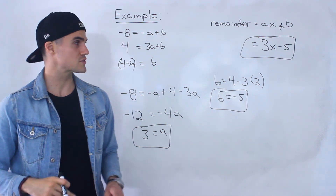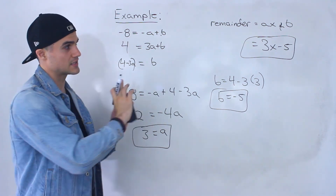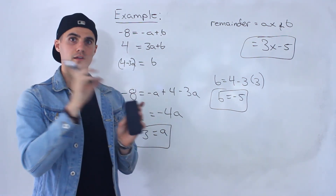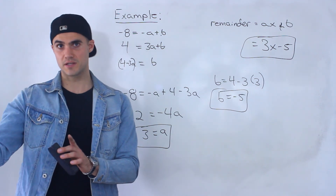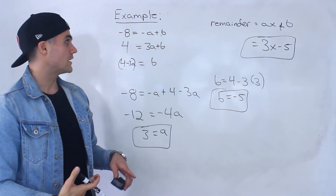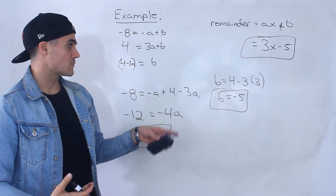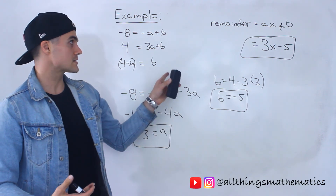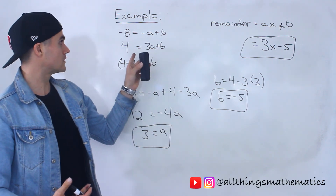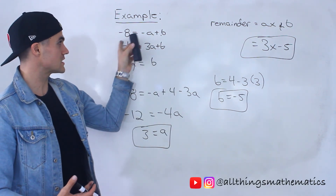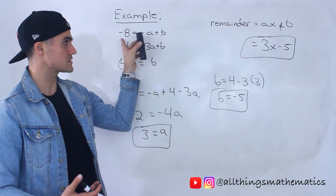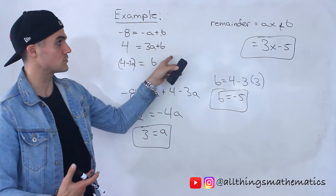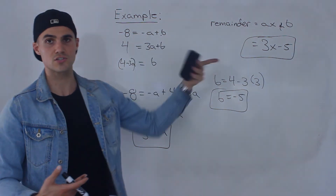A pretty tricky one — be on the lookout for this type of question. You've got to make that division statement, realize the remainder is ax plus b, and then use the information that p of three equals four and p of negative one equals negative eight to make your two equations and solve for a and b.